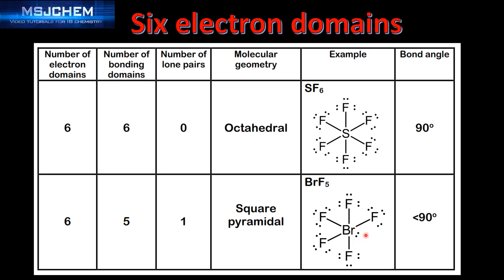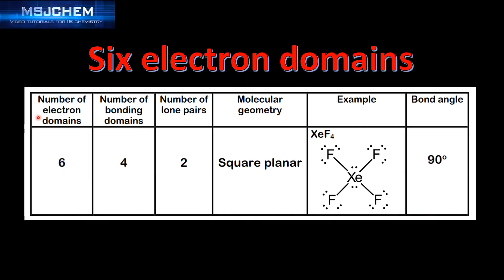Finally we have six electron domains with four bonding domains and two lone pairs of electrons. The molecular geometry is square planar. The example is XeF4 — here's the Lewis structure. The bond angle is 90 degrees.